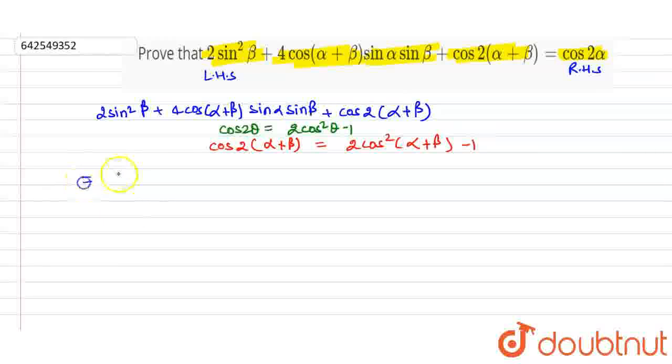On further simplification, it will be 2sin²β + 4cos(α+β)sinαsinβ + 2cos²(α+β) - 1.